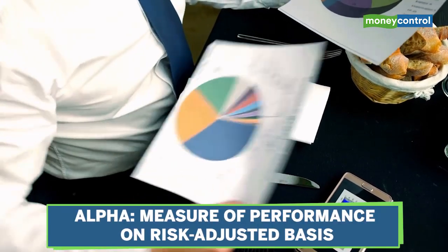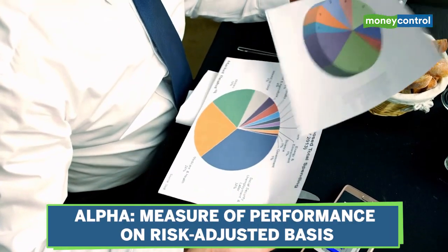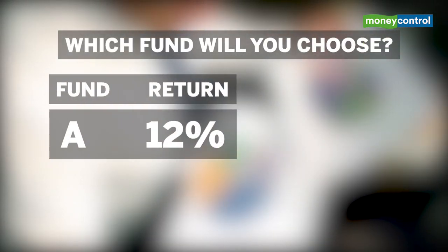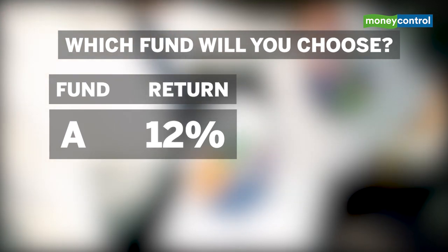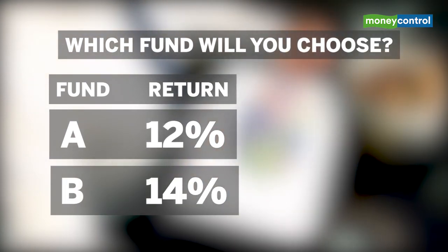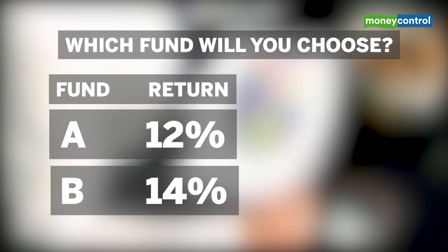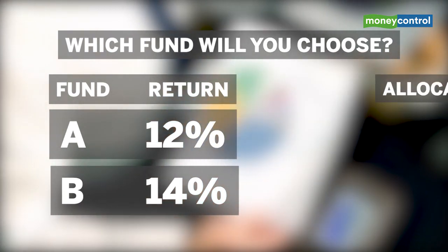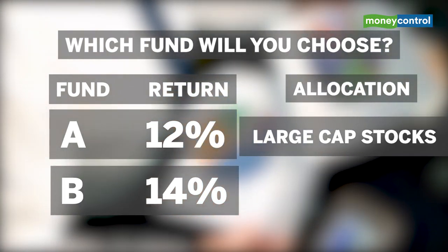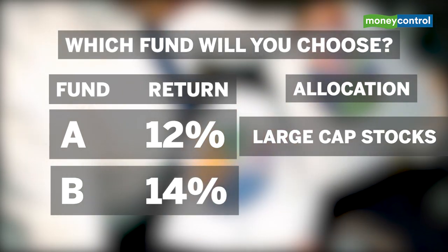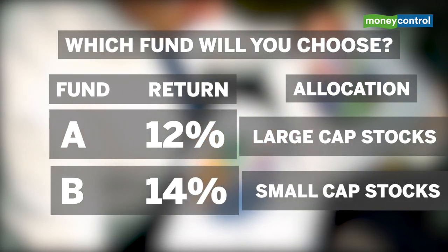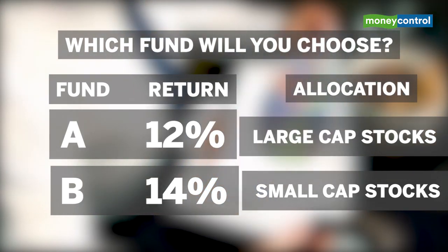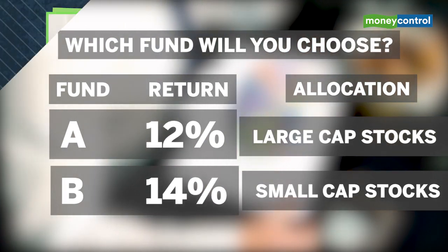Alpha is the measure of performance on a risk-adjusted basis. Let's take the case of two multi-cap funds. Assume that fund A has generated 12% returns and fund B has notched 14%. On the face of it, fund B sounds better, right? But if fund A got 12% by investing primarily in large-cap stocks with only 10% allocation to small caps, and fund B generated 14% by investing almost 50% in small caps, fund B doesn't sound the natural choice anymore.